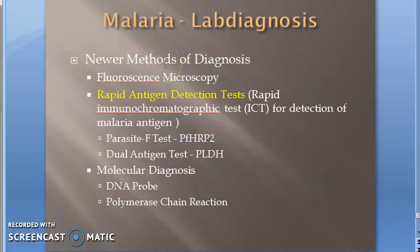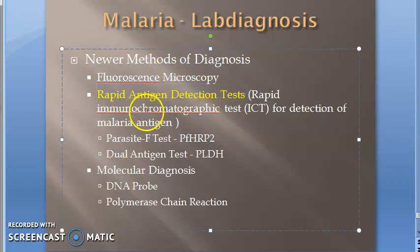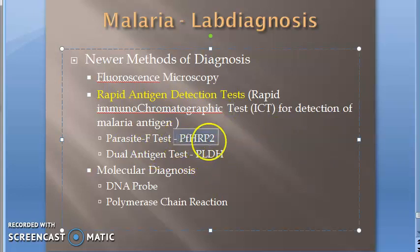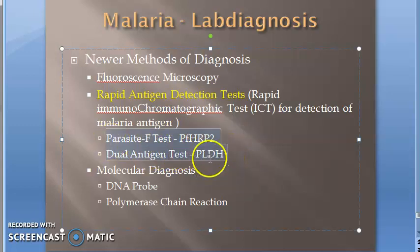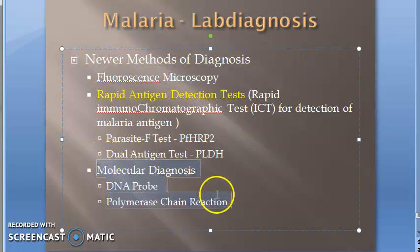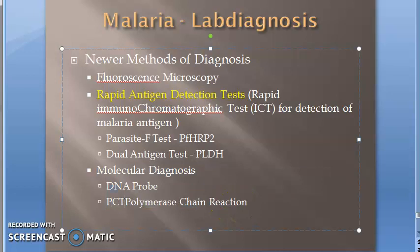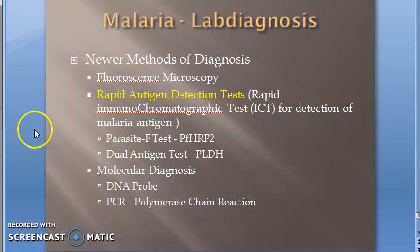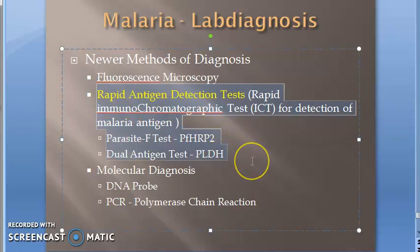Among the newer methods of diagnosis, the Rapid Antigen Detection Test is very important and has been asked in the exam — also called the Rapid Immunochromatographic Test. There are two types: the Parasite F test and the Dual Antigen test. Fluorescent microscopy and molecular diagnosis including DNA probe and PCR are also newer methods. These rapid tests detect the malarial antigen and can use cards for very fast results.